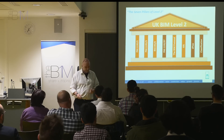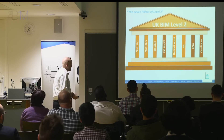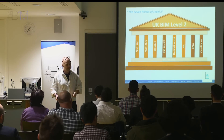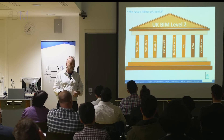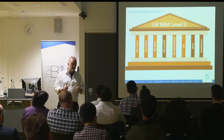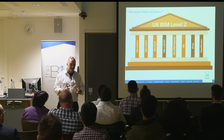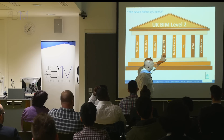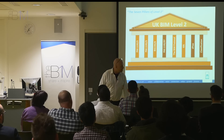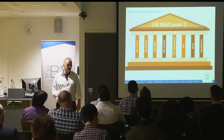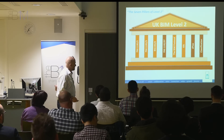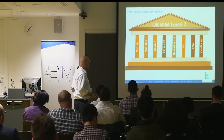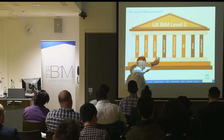Here we are at UK BIM Level 2. David Philp, one of the other leaders of the UK BIM movement, talks about this as the seven pillars of BIM. Anybody like to tell me the deliberate mistake here? The clue is 'seven pillars of BIM' — there's eight. Yes, give that man a prize. This one is the new kid on the block: PAS 1192 Part 5, which is now underway and will be issued as a draft before the end of this year and issued properly early next year.